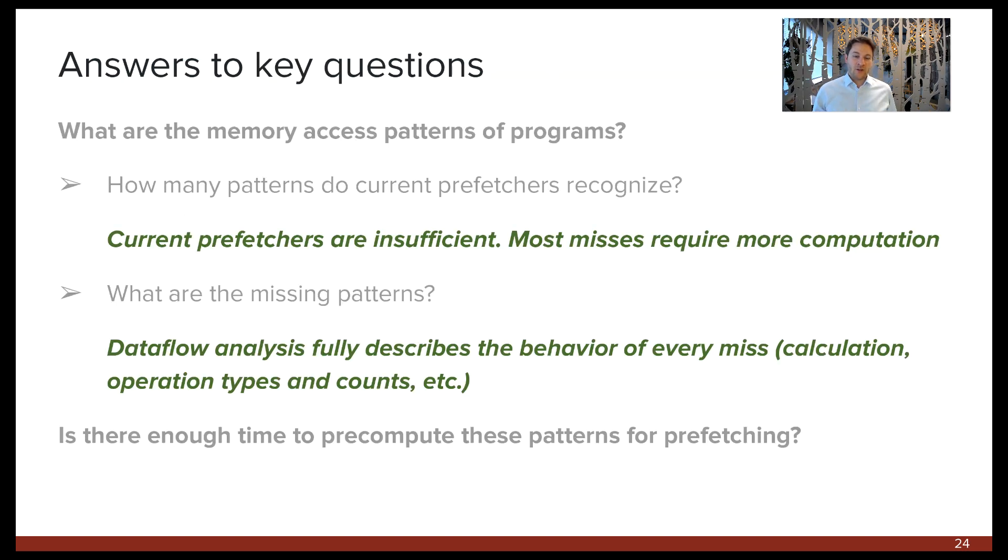We're now able to answer our first key question: what are the memory access patterns of programs? Dataflow analysis gives us the formulas for computing each miss address, and from that we can categorize the behavior. With this knowledge we can see why stride prefetchers, which are common in all of our chips, are not adequate, and more generally we can calculate how much any given prefetcher can help any given workload. Finally, we can extend this to designing improved prefetching techniques that cover a higher percentage of misses.